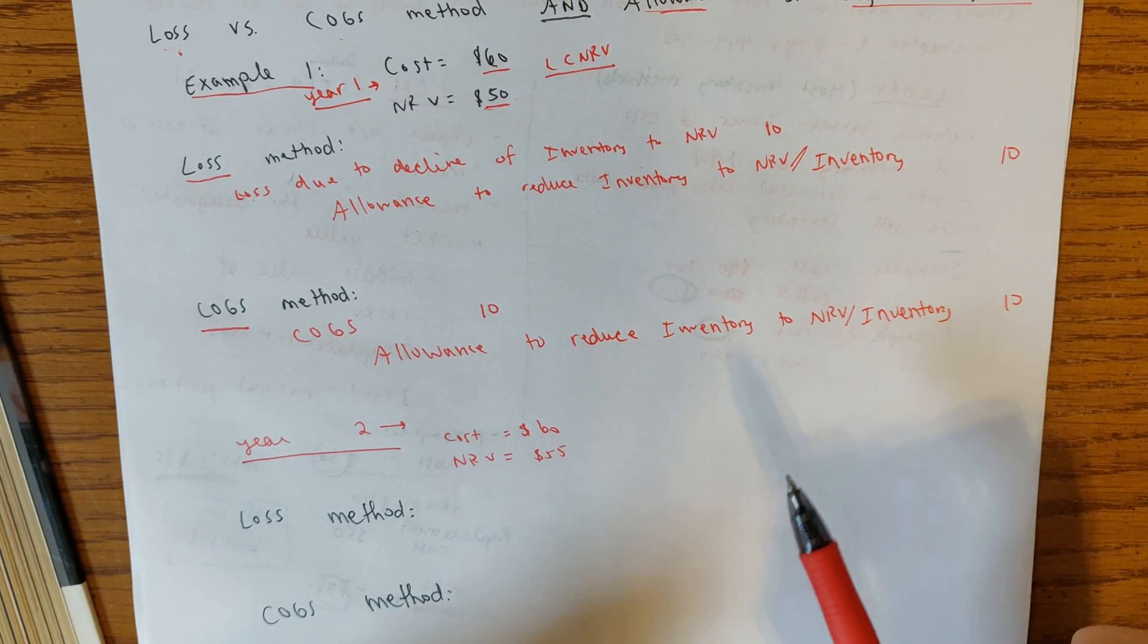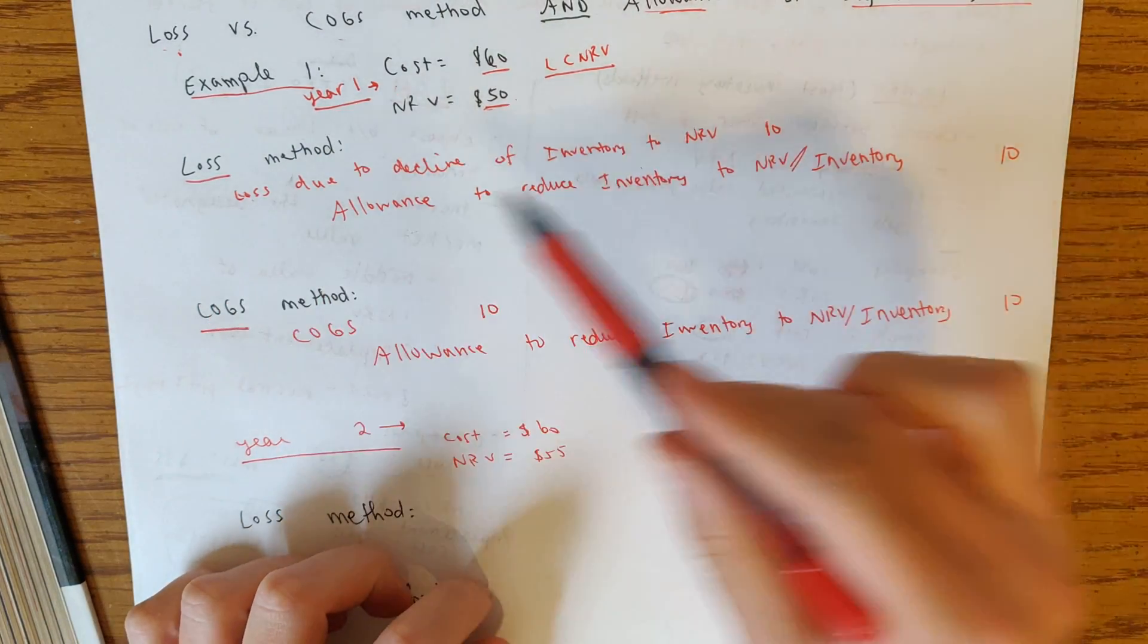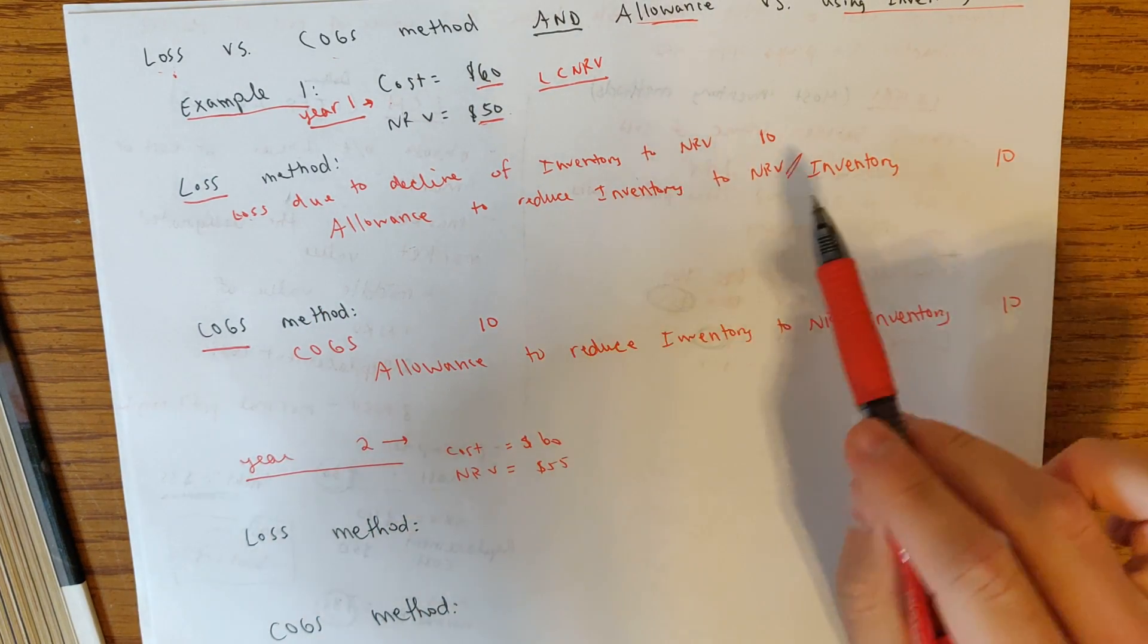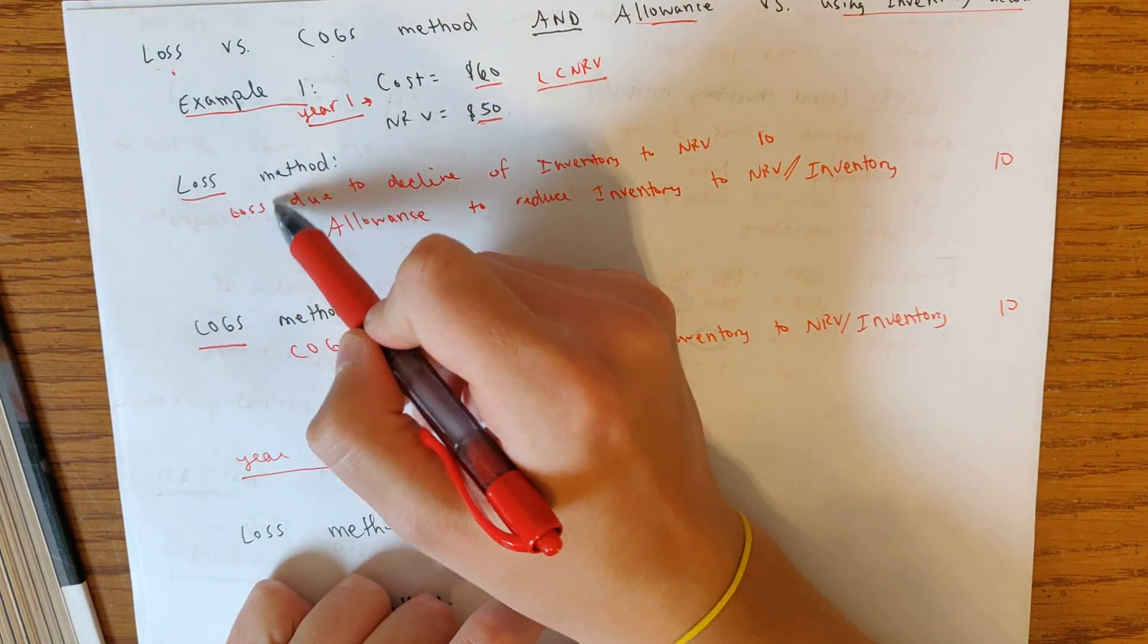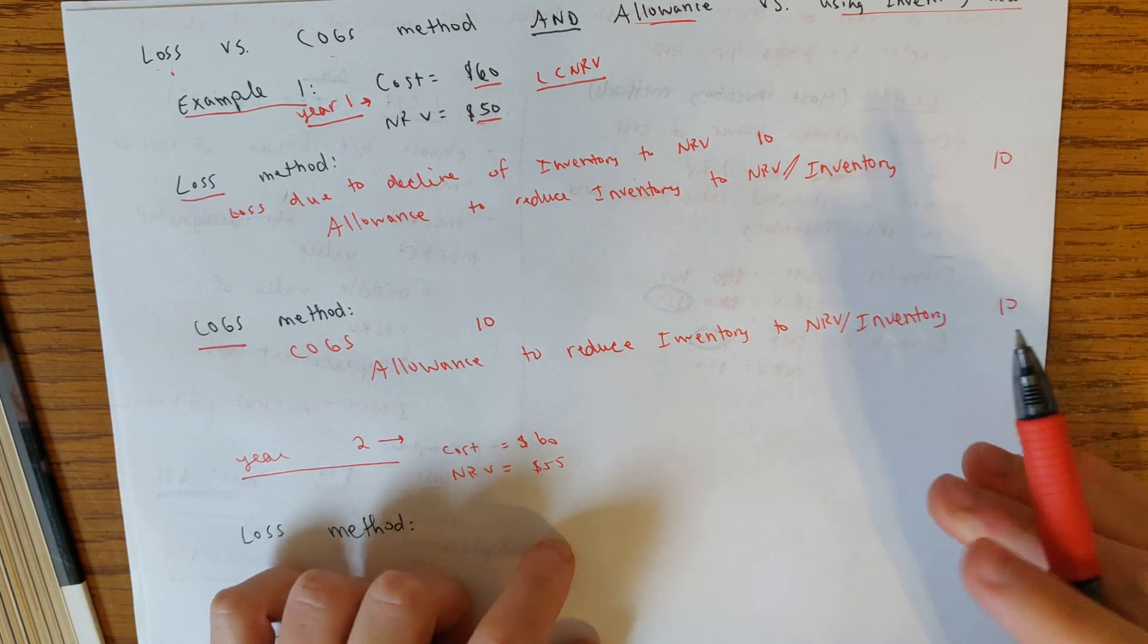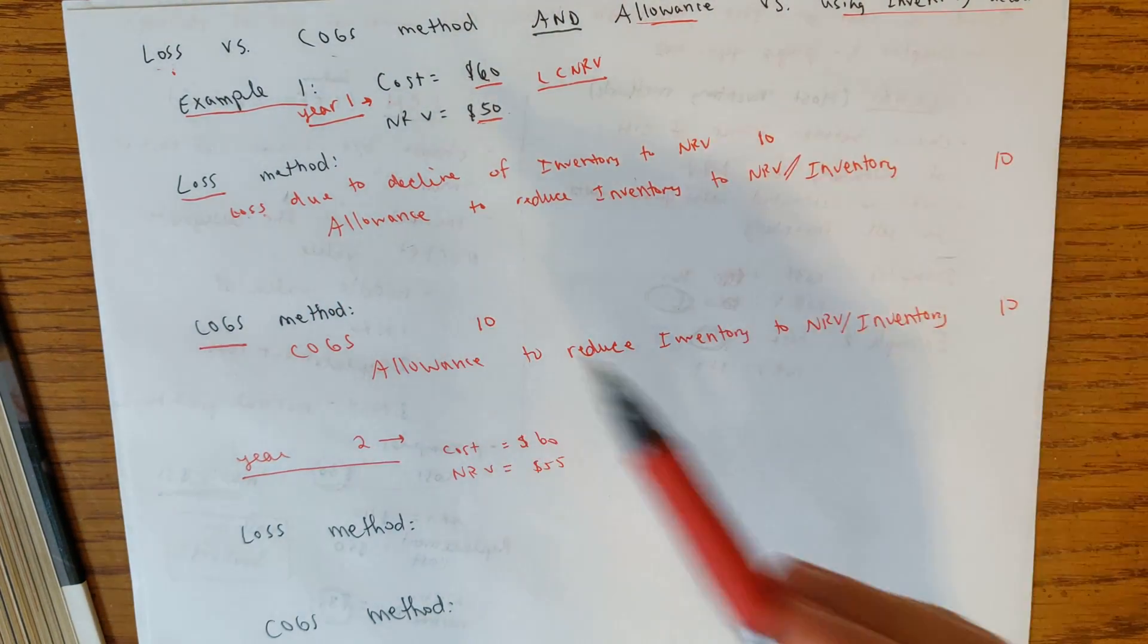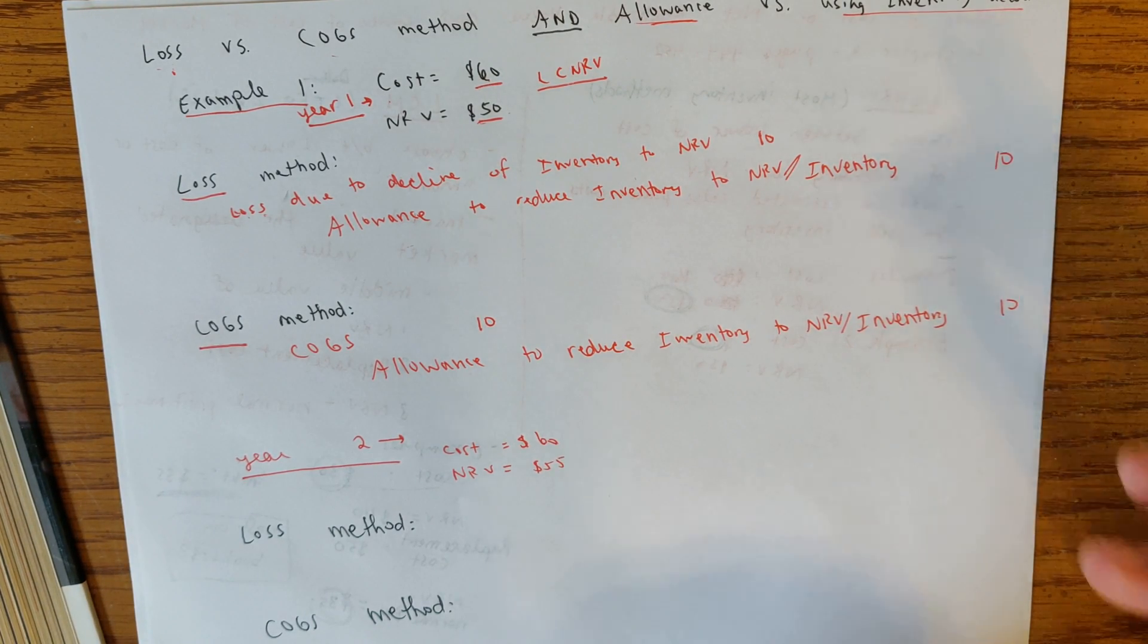The key thing to highlight here is that the loss and the cost of goods sold, those are like interchangeable in the sense that those are going to be the two debits you would potentially use to write down inventory. On the other side, you have allowance or inventory. You have one or the other. Some people get confused and they think maybe the allowance account is associated with the loss account or maybe inventory is associated with cost of goods sold or something like that. That's not true. You have to listen. You have to read the problem and you have to do what it tells you to do. So if it tells you use loss and allowance, use loss and allowance. If it says cost of goods sold and allowance, you do that or whatever iteration it is.